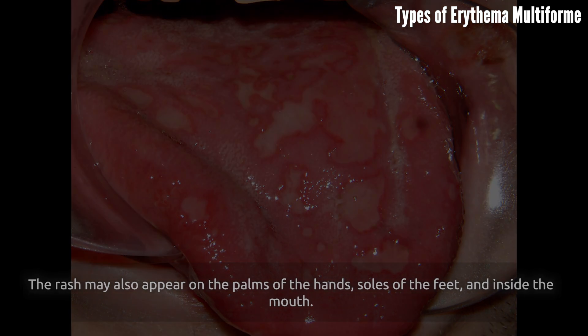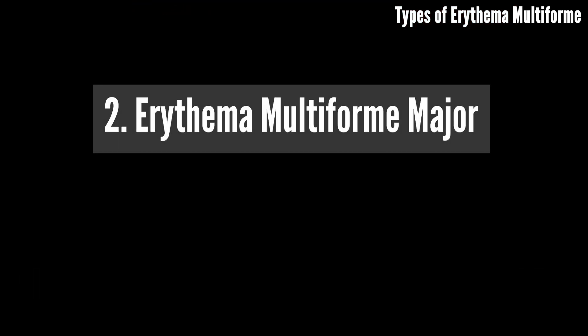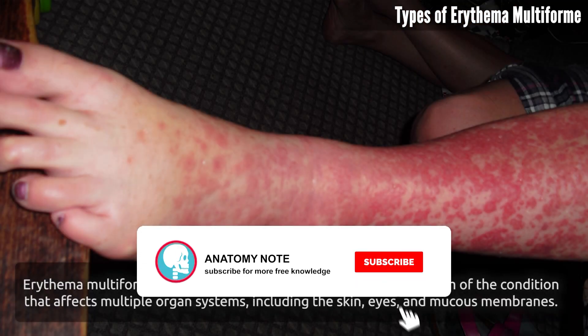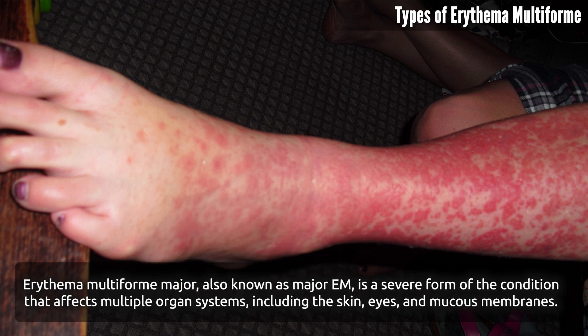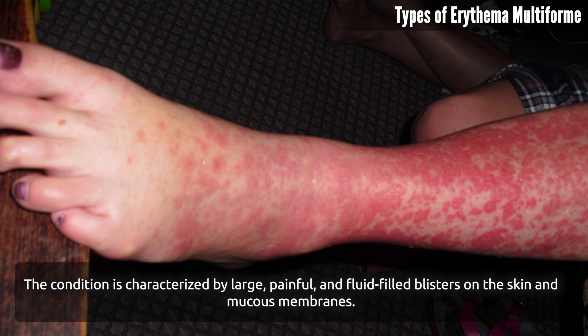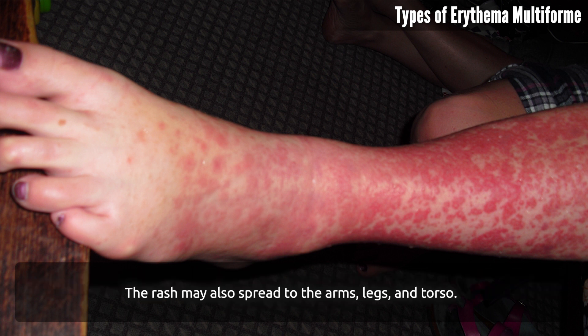The rash in minor EM may also appear inside the mouth. Erythema multiforme major, also known as major EM, is a severe form of the condition that affects multiple organ systems including the skin, eyes, and mucous membranes. It is characterized by large, painful, fluid-filled blisters on the skin and mucous membranes. The rash may also spread to the arms, legs, and torso.